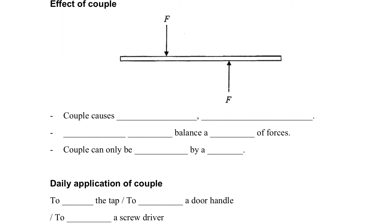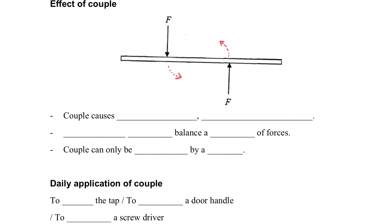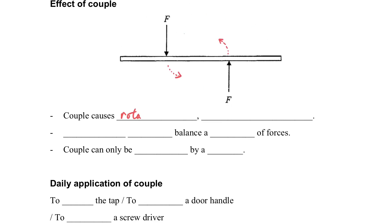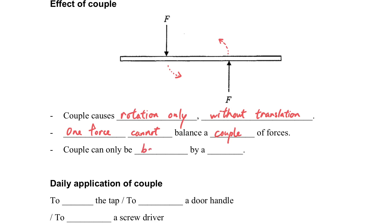What is the effect of couples? You can see that one force provides an anticlockwise moment, and the other also produces an anticlockwise moment, causing rotation. The couple causes rotation only, without translation. One force cannot balance a couple — a couple can only be balanced by another couple. These are the key characteristics.